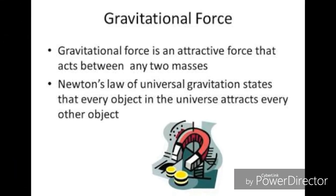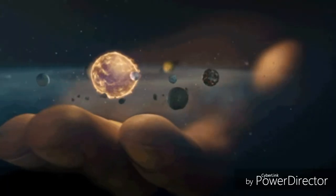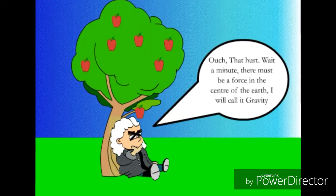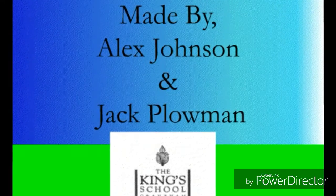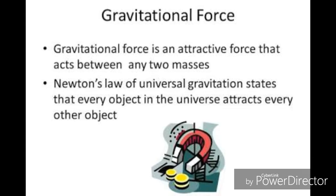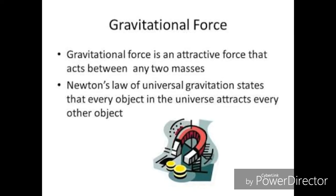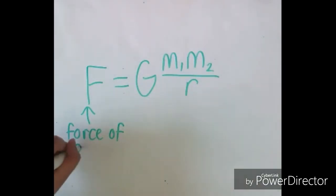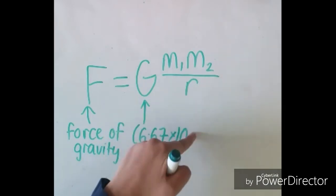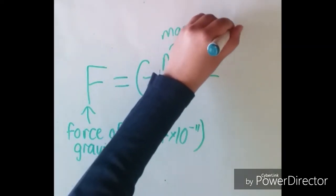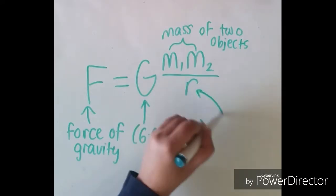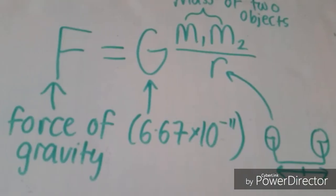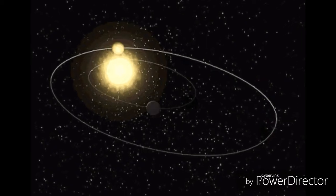The gravitational force is a force that attracts any objects with mass. You right now are pulling on every other object in the entire universe. This is called Newton's universal law of gravitation — a formula for understanding the relationship of gravity between two objects. The equation uses f for the force of gravity, g for the gravitational constant, the m's for the masses of the objects being considered, and r for the radius of the distance between the two objects. Thus the greater the mass an object has and the closer they are together, the stronger the force of gravity.